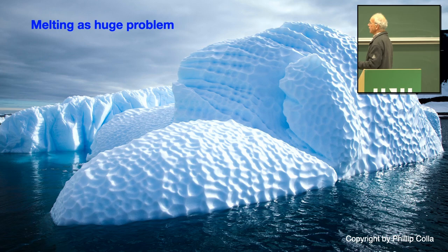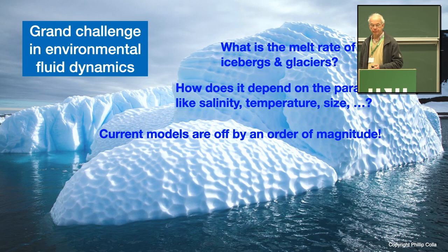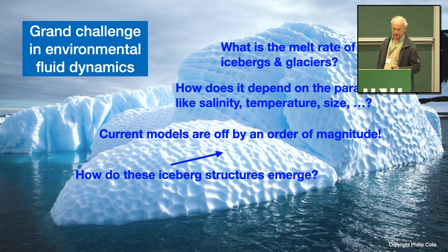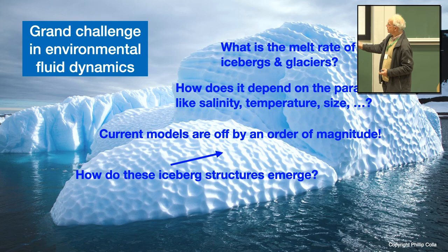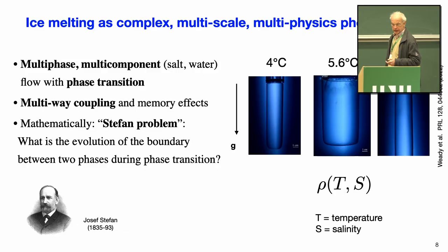Melting is a huge problem and one of the grand challenges in environmental fluid dynamics. Questions include what is the melt rate of icebergs and glaciers, how does it depend on parameters like salinity, temperature, and size — and the current models are off by an order of magnitude or more. We also ask how do these iceberg structures emerge, and how to upscale this to even larger problems.